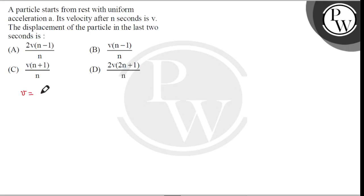So v equals a times n. And before two seconds, the velocity will be v dash equals zero plus a times (n minus 2).